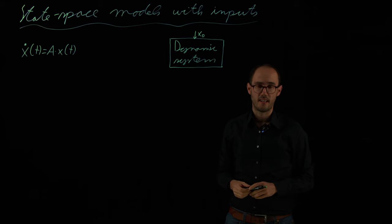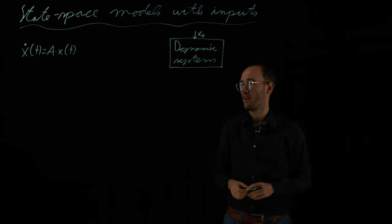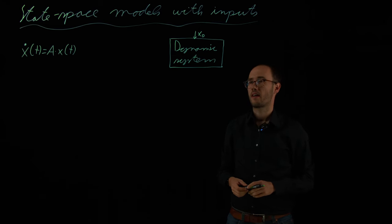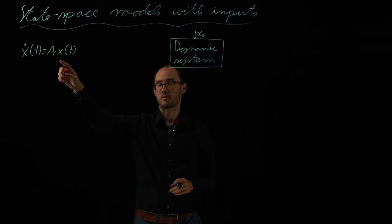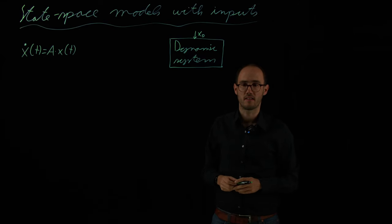However, in real world systems, especially in engineering systems, but also maybe in social systems and biological systems, we are normally not able to directly measure the state x, right? So, x is like the internal information, the internal state of our system.